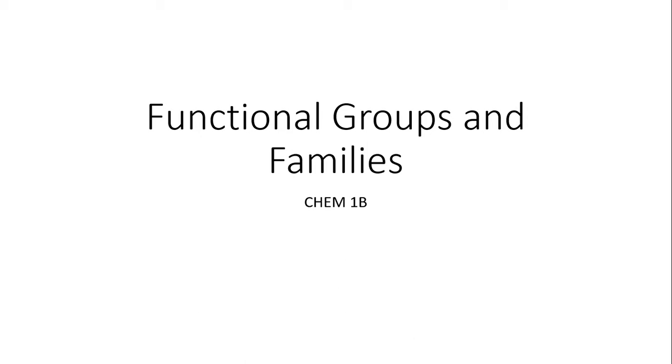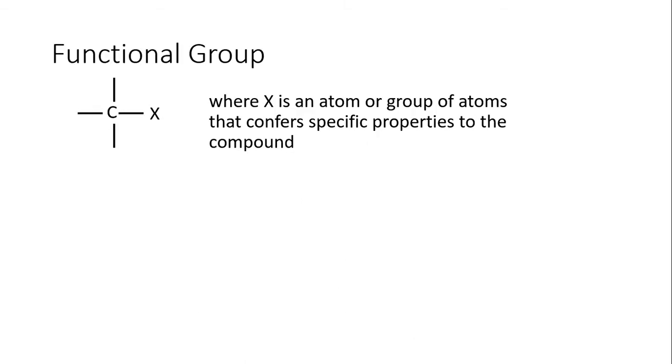As we have said before, carbon is a very versatile element in terms of its bonding schemes and the numbers of other atoms of other elements that it can actually form covalent bonds with. When we talk about a functional group, here's what we mean. Here is a carbon with its four typical bonds connected to something called X. A functional group here represented by X can be an atom or a group of atoms that confers specific properties to the compound.